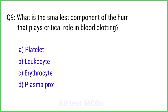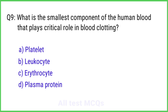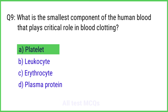Question No. 9. What is the smallest component of human blood that plays a critical role in blood clotting? The correct answer is Option A: Platelet.